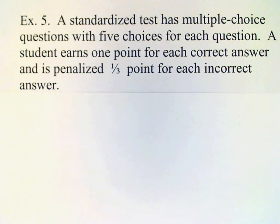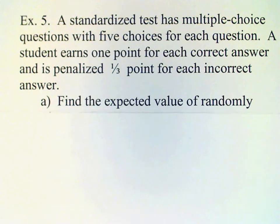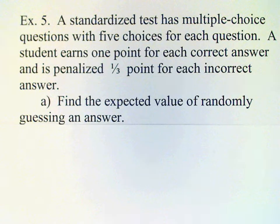Let's suppose that there are five choices for each question and a student will earn one point for each correct answer and will lose one-third of a point for each incorrect answer. We would like to know the expected value of randomly guessing an answer.